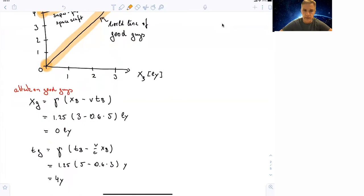the x position equals zero. At what time did this event happen? For the good guys, you find gamma times t_b minus v over c times x_b. If you put the numbers in, the attack happens in year four.